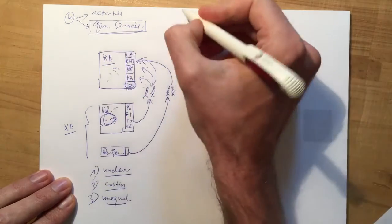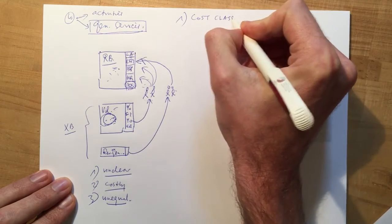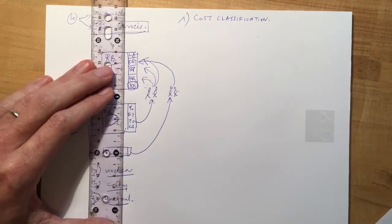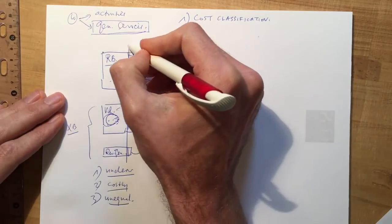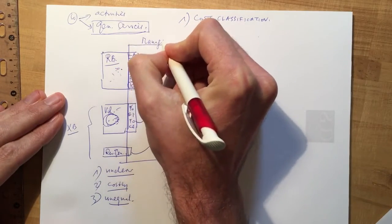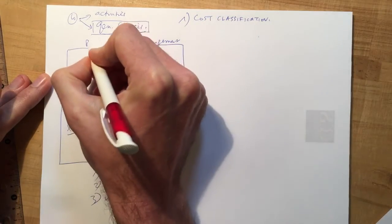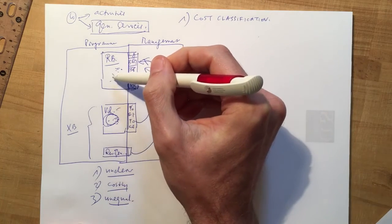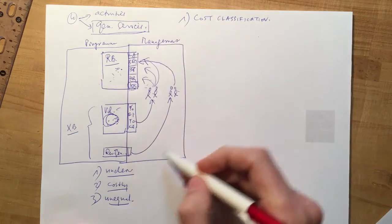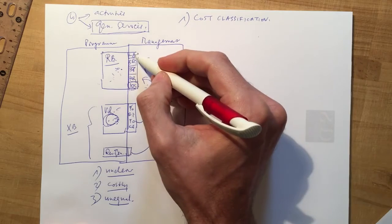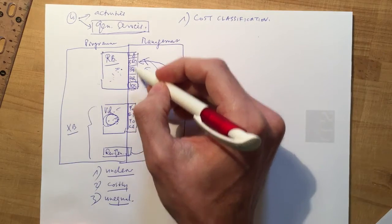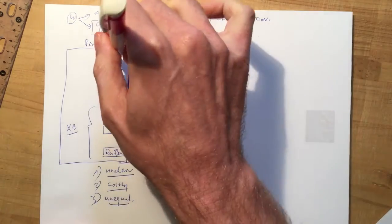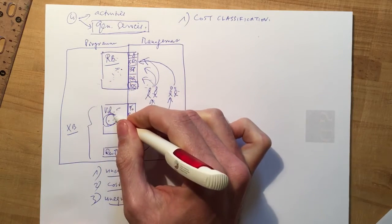UNESCO proposes to change this via two principles. The first is cost classification: drawing a clear line to separate management costs from program costs. Program costs can be directly linked to program delivery and results, whereas management costs are cross-cutting — they serve the organization as a whole. For example, the Bureau of Financial Management does financial management that benefits the whole organization, not any specific regular or voluntary project in particular.